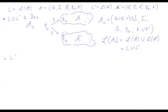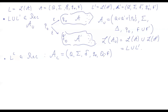For the complement — to prove that the complement of L is a recognizable language — this is a very easy construction. I build an automaton which goes exactly like A with just one exception: the same states, same input alphabet, same transition function, same initial state, but as the set of final states I use Q minus F. This automaton accepts whenever A was rejecting and rejects whenever A was accepting. So the language of this automaton is exactly sigma-star minus the language of A, which is the complement of L.